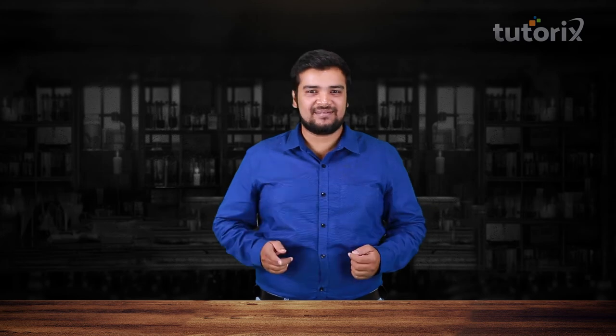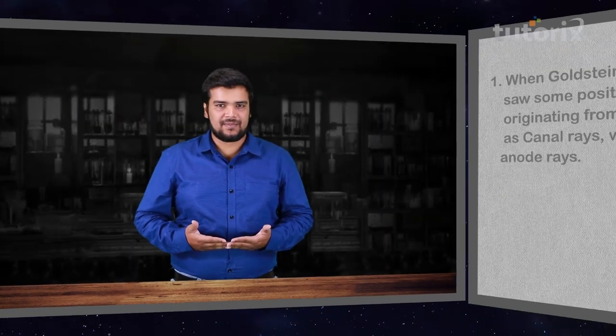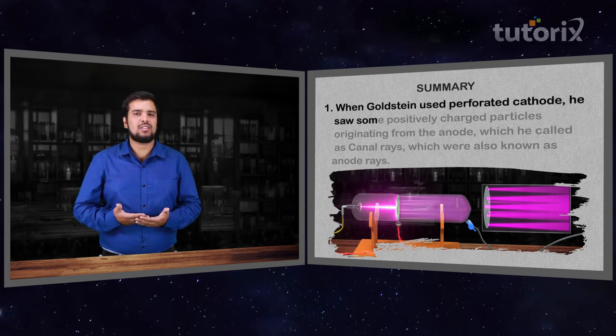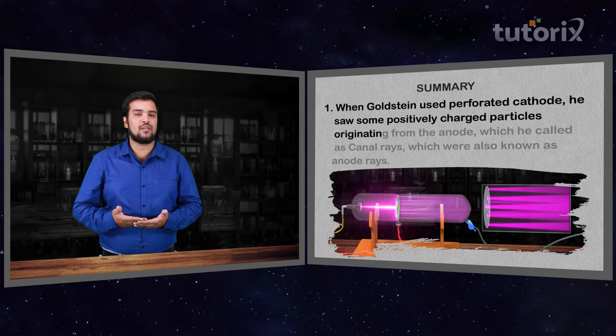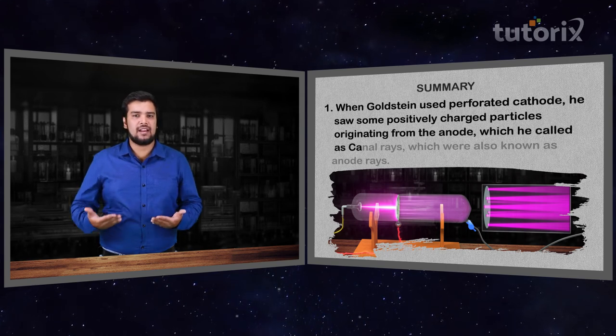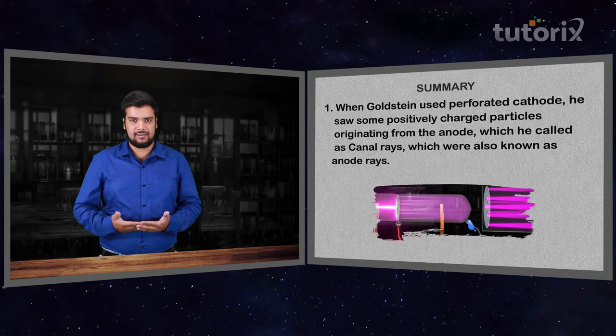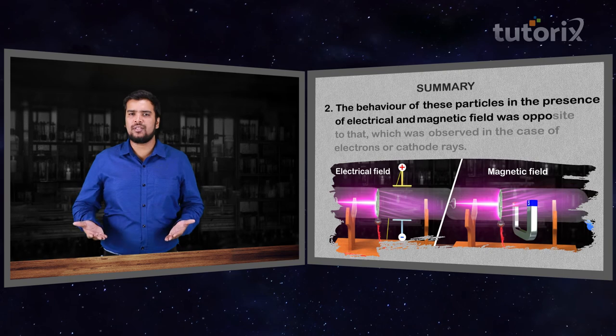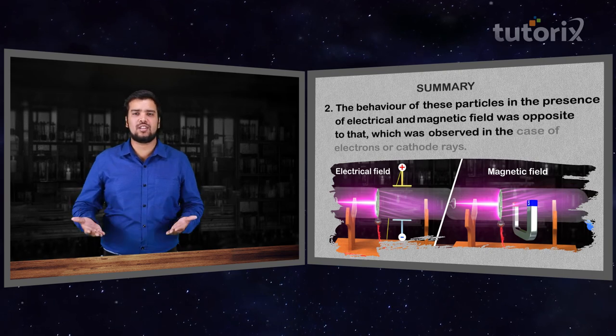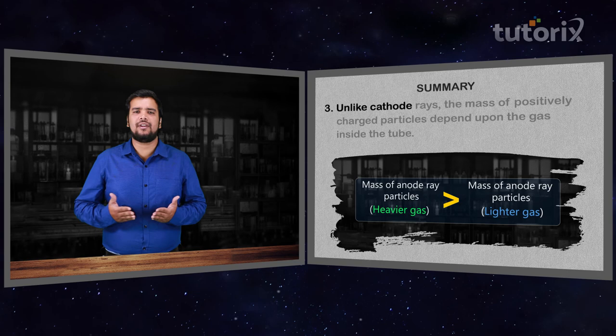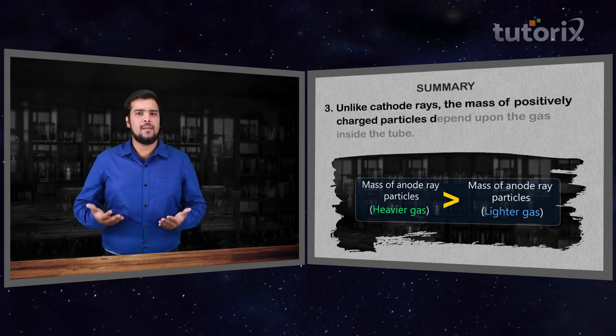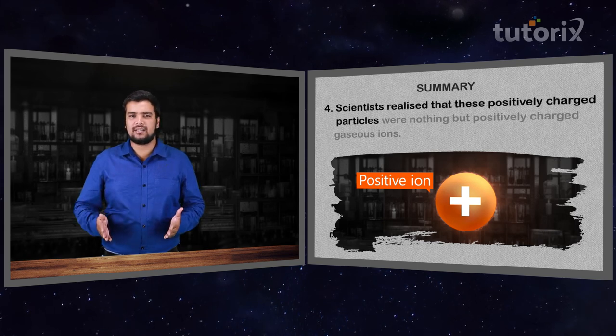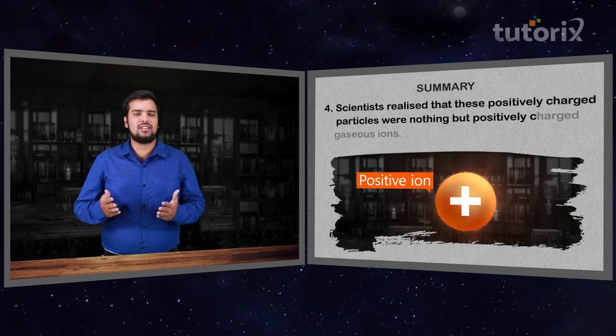Until then, stay tuned. So let's summarize all the things that we have learned today. We saw when Goldstein used a perforated cathode, he saw positively charged particles originating from the anode, which he called canal rays, also known as anode rays. The behavior of these particles in the presence of an electrical and magnetic field was opposite to what was observed in the case of electrons or cathode rays. Unlike cathode rays, the mass of the positively charged particles depends upon the gas inside the tube. Scientists realized that these positively charged particles were nothing but positively charged gaseous ions.